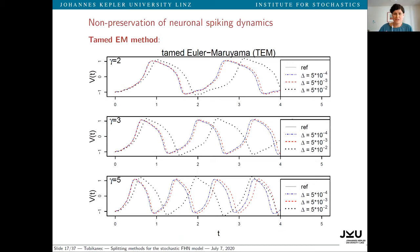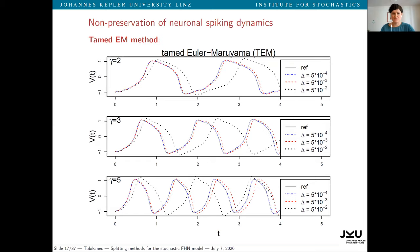Here I'd like to illustrate this non-preservative behavior. We consider the tamed Euler-Maruyama method using the same underlying random numbers, so ideally the paths should overlap. What we observe is that the tamed Euler-Maruyama method tends to underestimate the frequency and overestimate the amplitude of neuronal oscillations as the time step delta is increased. For example, looking at the middle panel, we only observe two instead of three oscillations for a larger choice of delta, and the method already deviates from the desired behavior even for very small time steps.